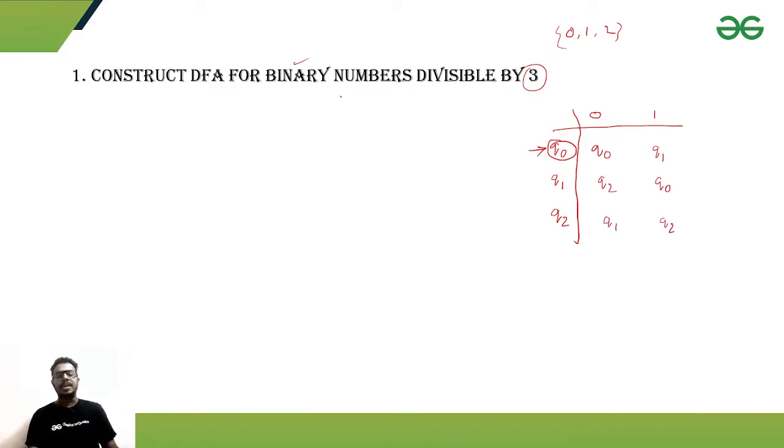This is the hack by using which we can make this kind of problems very easier. We don't need to discuss how if a number is divisible by three, how it's reflecting to the binary number design. We can directly construct the DFA for this kind of problems. So this is the state table, and we will draw the state diagram accordingly.